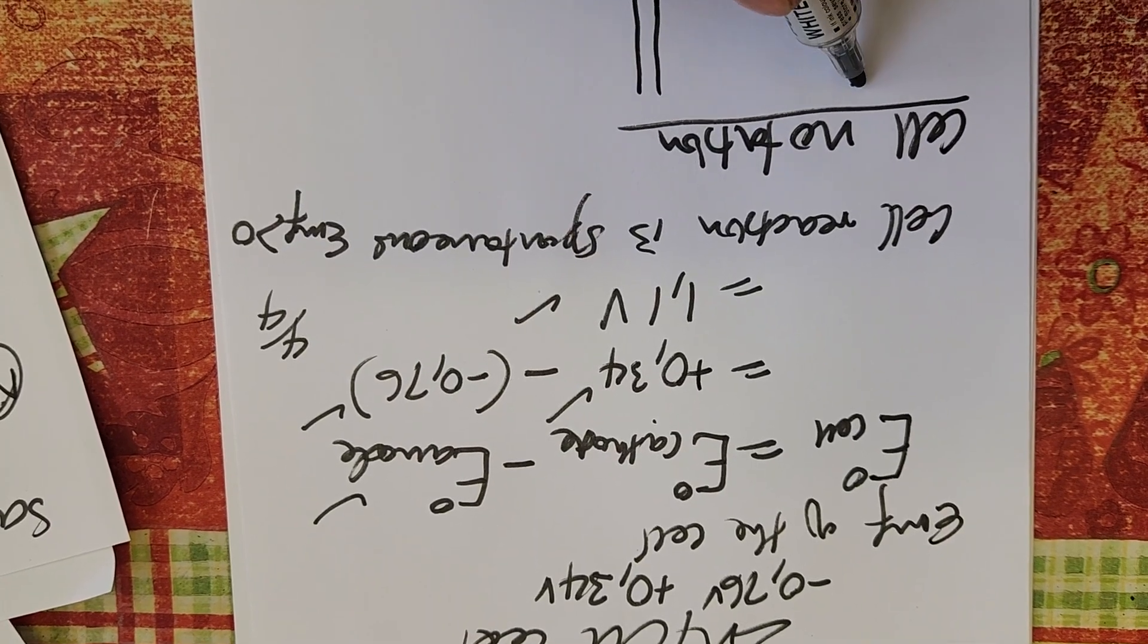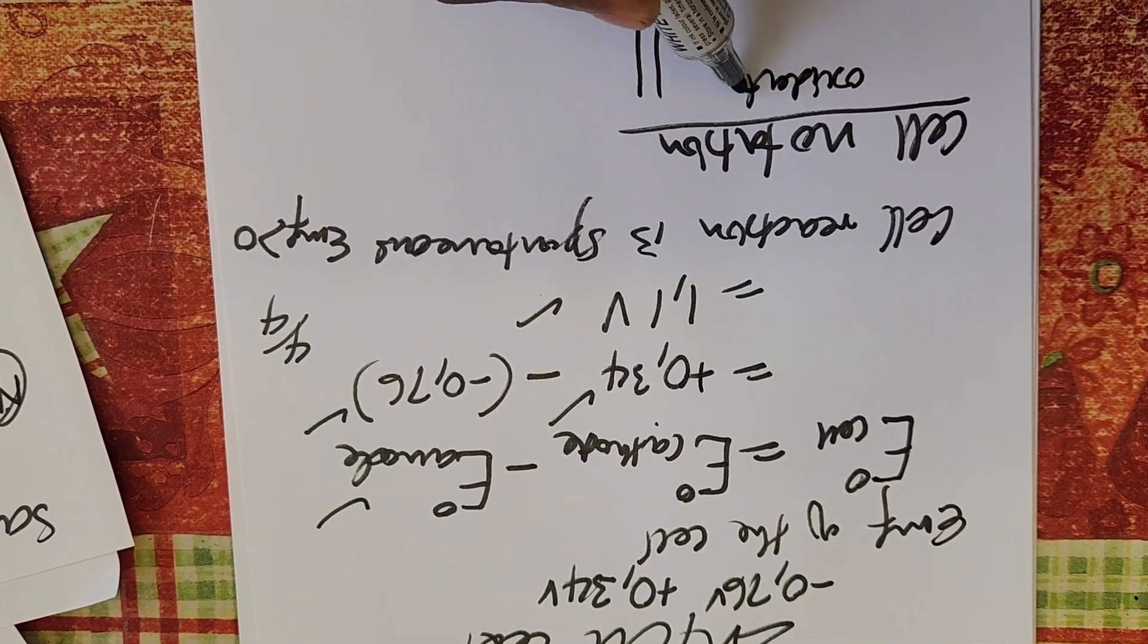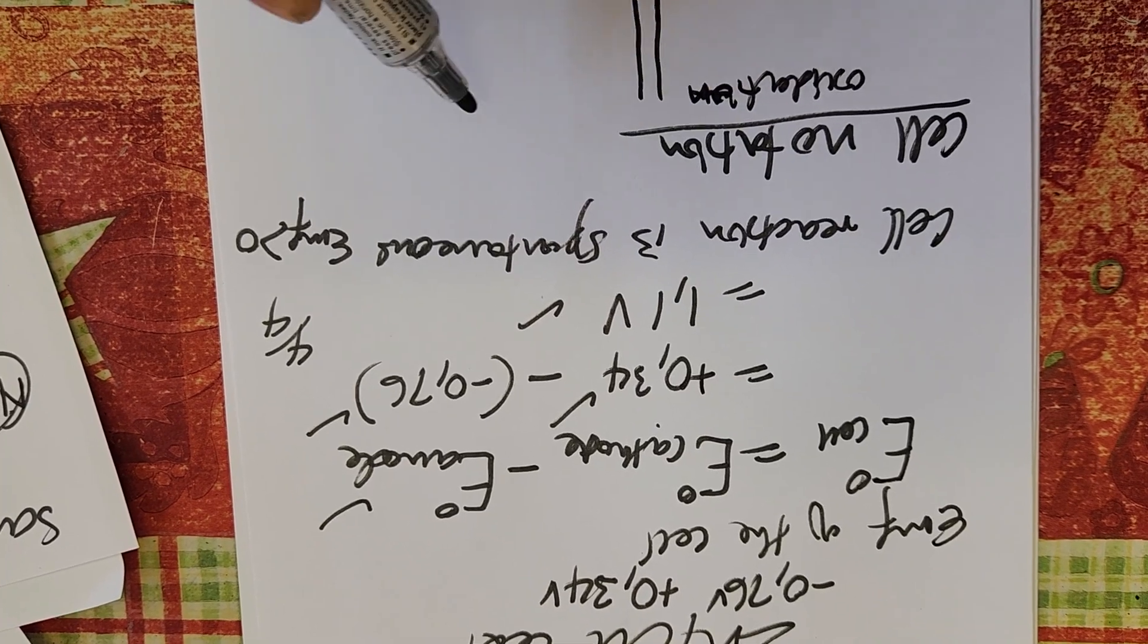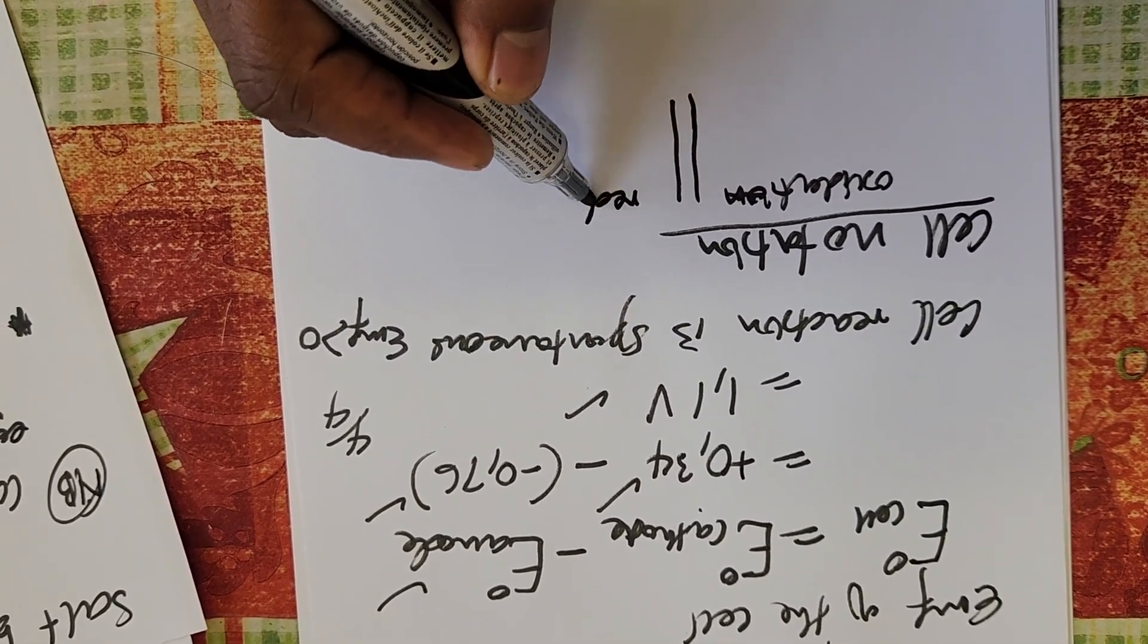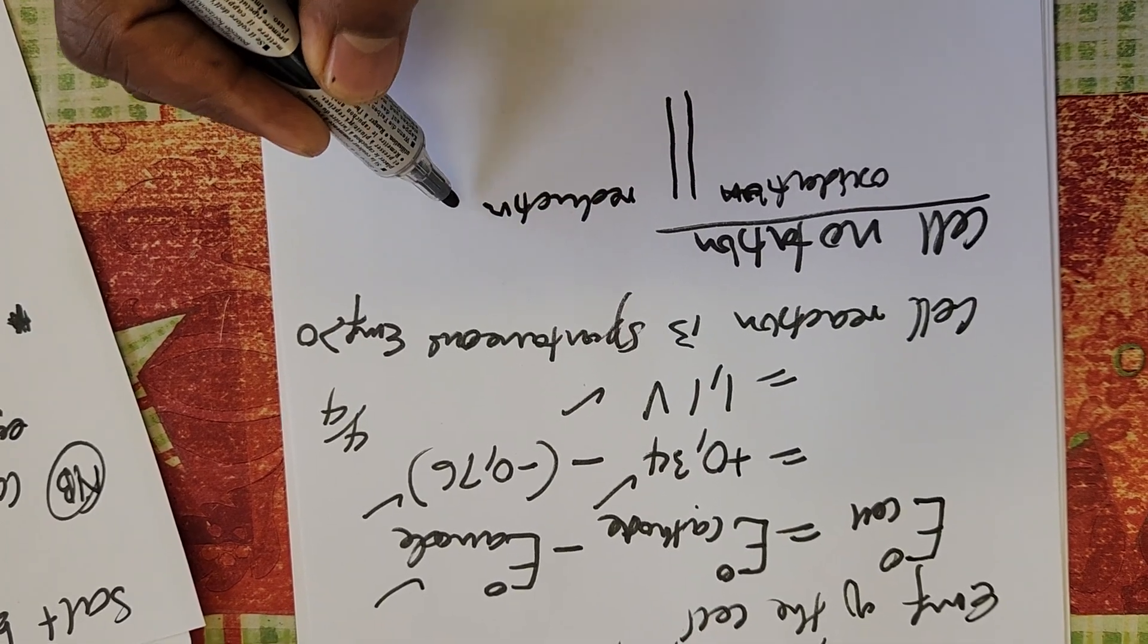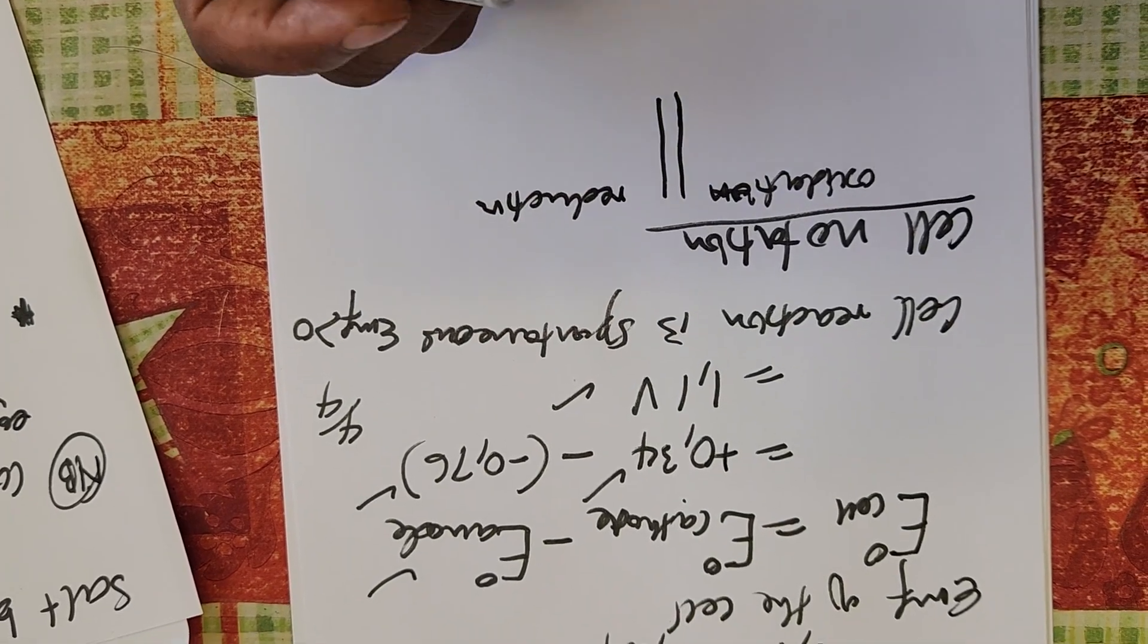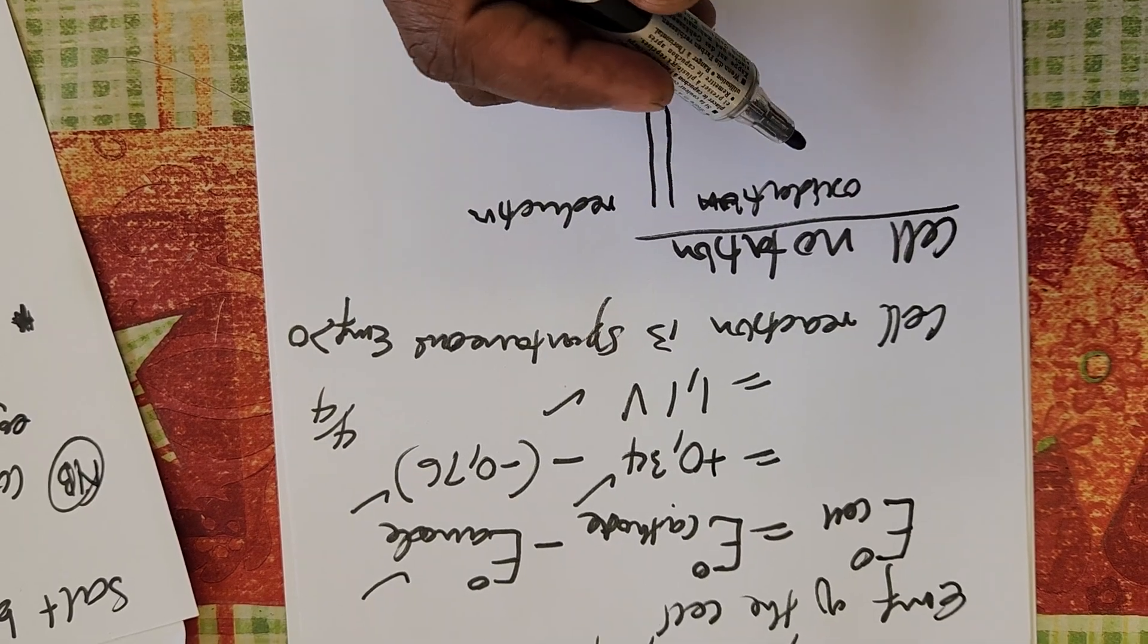We start with the salt bridge. On the left-hand side of the salt bridge is where oxidation takes place, and on the right-hand side of the salt bridge is where reduction takes place.